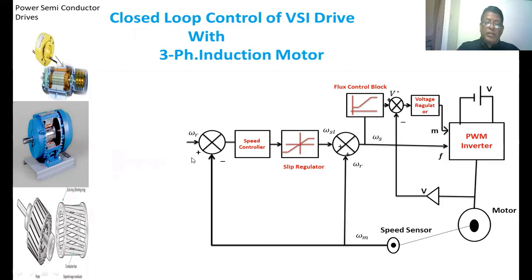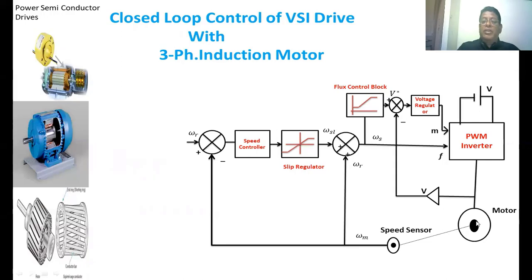Suppose there is a decrease in reference speed — the error in speed becomes negative, which sets the slip regulator to a negative slip speed. Whenever the negative slip speed is set, braking of the induction motor occurs at maximum torque condition. Negative slip speed corresponds to the braking operation, so the speed of the motor decreases. Once the speed decreases, the error in speed decreases. Finally, the slip of the induction motor is set to a value such that the developed torque equals the load on the induction motor.